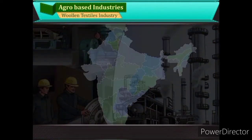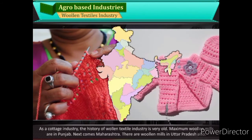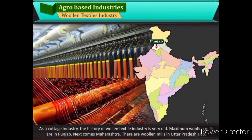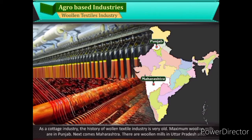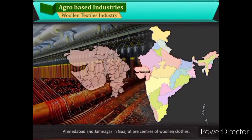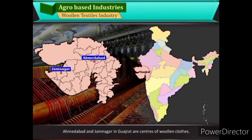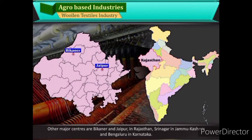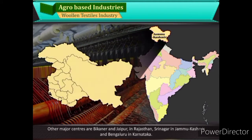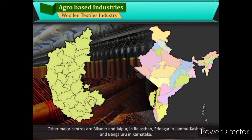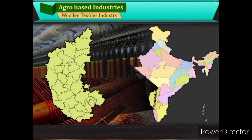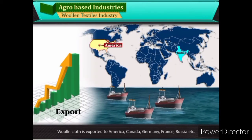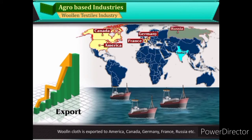Woolen Textiles Industry: As a cottage industry, the history of woolen textile industry is very old. Maximum woolen mills are in Punjab, followed by Maharashtra. There are woolen mills in Uttar Pradesh also. Ahmedabad and Jamnagar in Gujarat are centres of woolen clothes. Other major centres are Bikaner and Jaipur in Rajasthan, Srinagar in Jammu & Kashmir, and Bengaluru in Karnataka. India also produces woolen carpets. Woolen cloth is exported to America, Canada, Germany, France, Russia, etc.